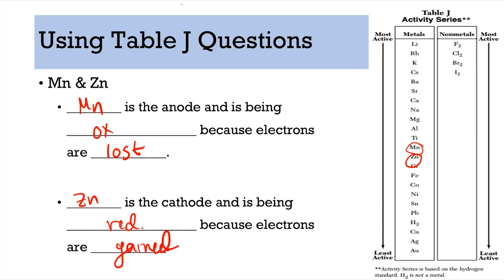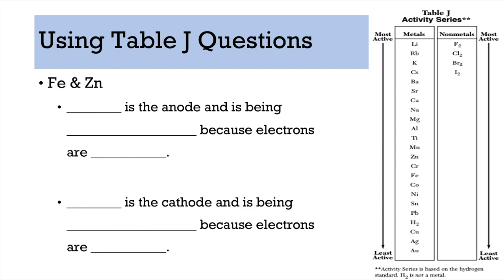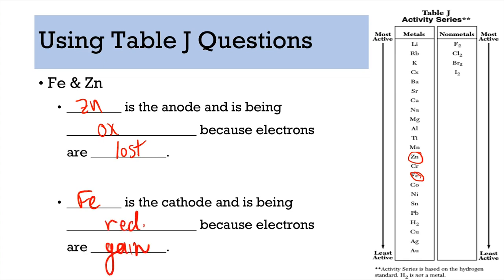If at this point you're thinking 'why are we still doing practice questions, this is so easy' — well, that means you've learned something, and that is good. Next pair: Fe (iron) and zinc. Zinc is higher up, so zinc is the anode — it is oxidized and electrons are lost. That means iron is the cathode — it is reduced and electrons are gained.